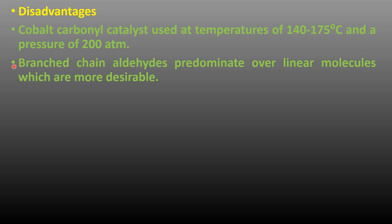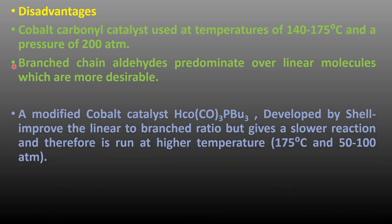Linear aldehydes are reduced to linear alcohols, which are converted to detergents. Linear detergents are more biodegradable than detergents containing branched alcohols. A modified cobalt catalyst, HCo(CO)3(PBu3), developed by Shell, improves the linear to branched ratio but gives a slower reaction rate and therefore is run at higher temperatures.